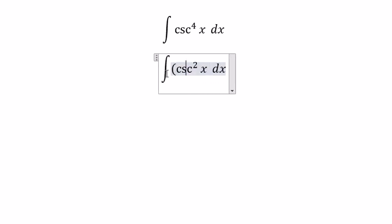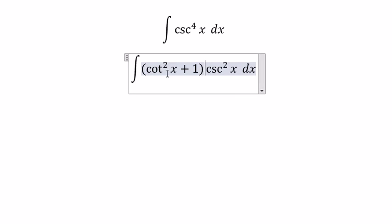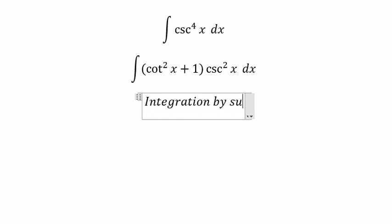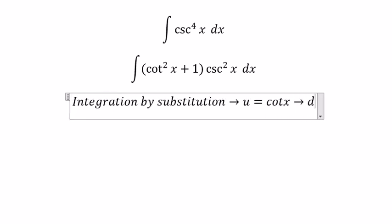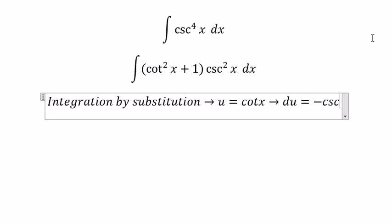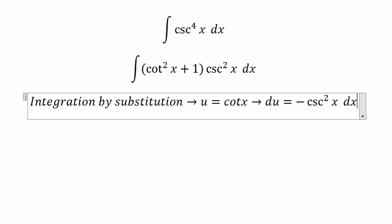In this one, you rewrite it as cotangent x squared plus one times cosecant squared x. Next, we need to use integration by substitution. So we let u equal to cotangent x, du we get negative cosecant of x squared dx. Because we don't have a negative in here, so we put negative next to du.